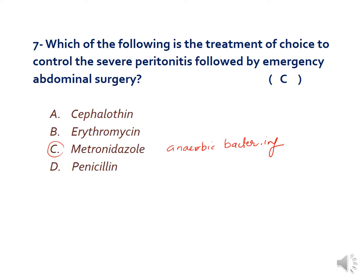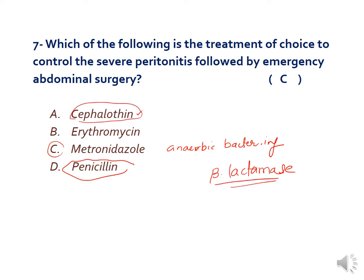Two other effective antibiotics — imipenem and piperacillin-tazobactam — can also be used but are costlier. Bacteroides fragilis commonly possesses a beta-lactamase enzyme responsible for resistance to penicillins and cephalosporins, so cephalothin would not be effective. Erythromycin is not indicated in the treatment of Bacteroides species because it mainly concentrates in respiratory secretions rather than peritoneal secretions.